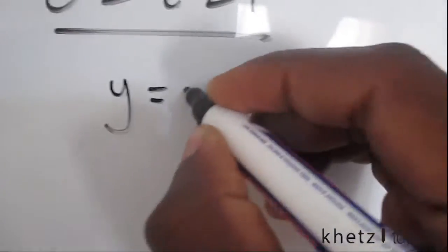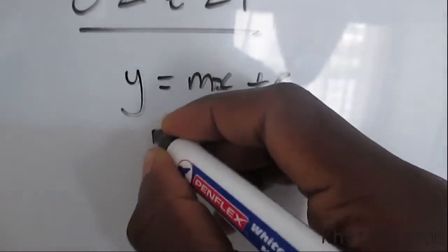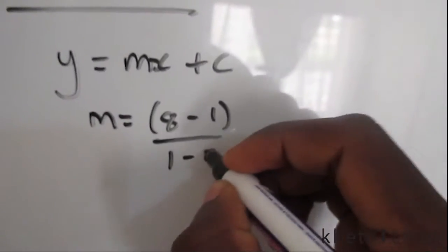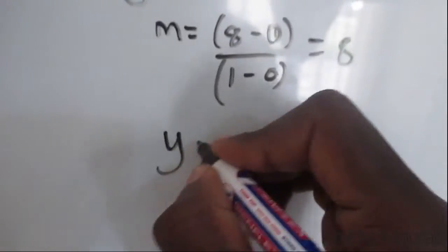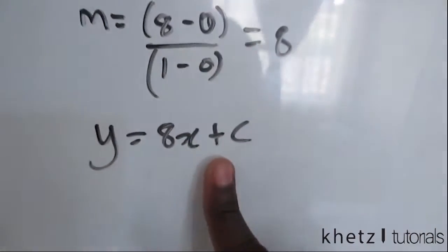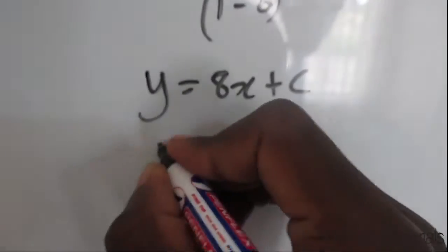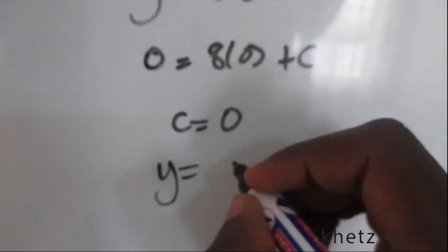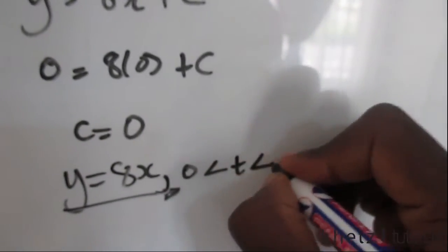From that we can find the gradient of this slope and then ultimately find the formula. Using y equals mx plus c, we're going to take these two points to find m, which is our gradient. So we're going to take the top point first and say 8 subtract 0 and 1 subtract 0. Our gradient is 8. Taking 0, 0 along that same line will give us a C of 0, which means the formula is y equals 8x, and that is for time between 0 and 1.